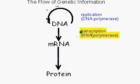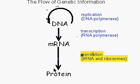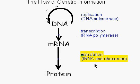Label the arrow from mRNA to protein 'translation.' Add tRNAs and ribosomes in parentheses to remind yourself that the molecule that performs translation is tRNA and the site of translation is ribosomes.